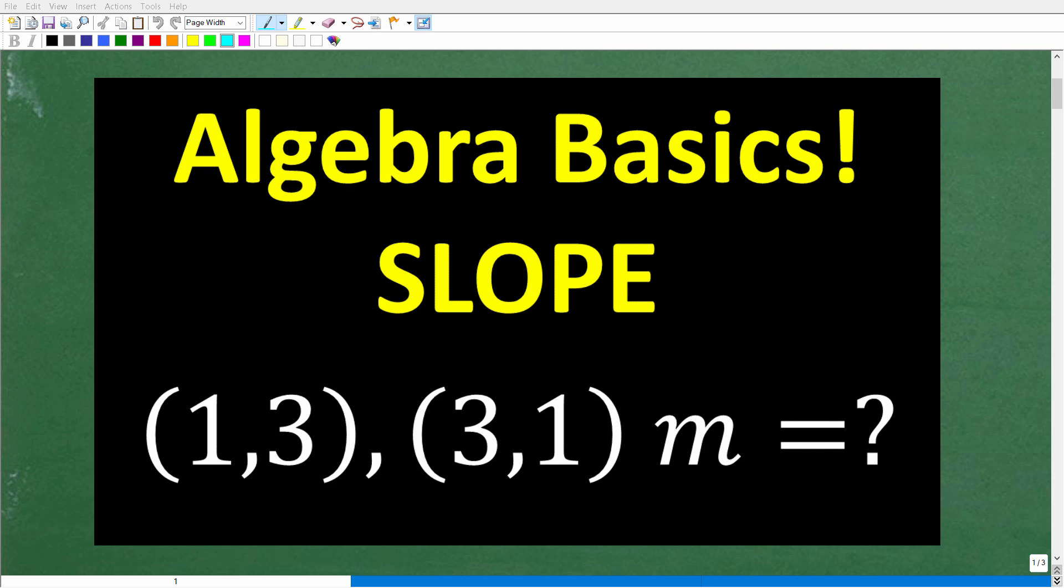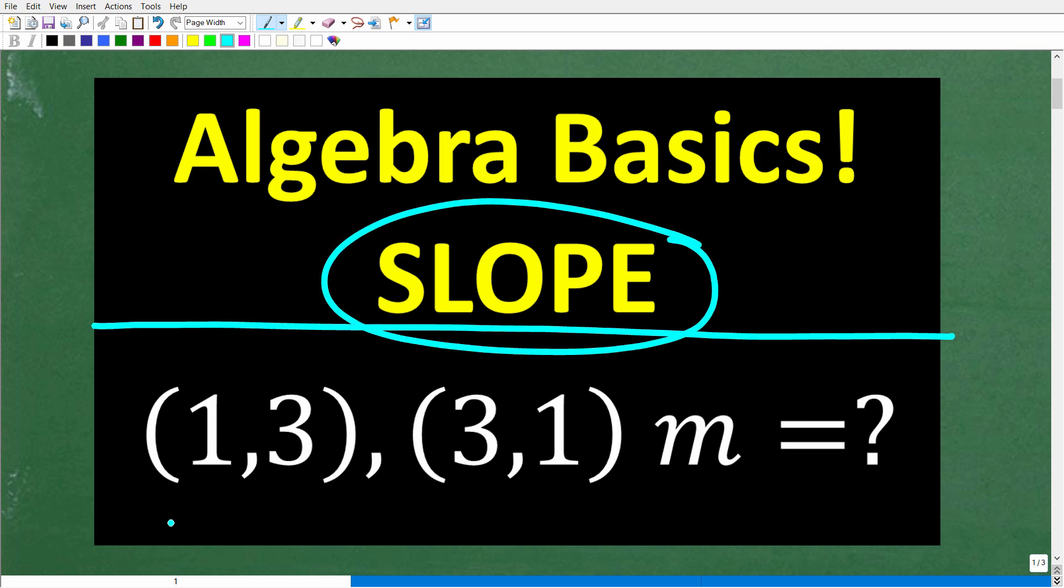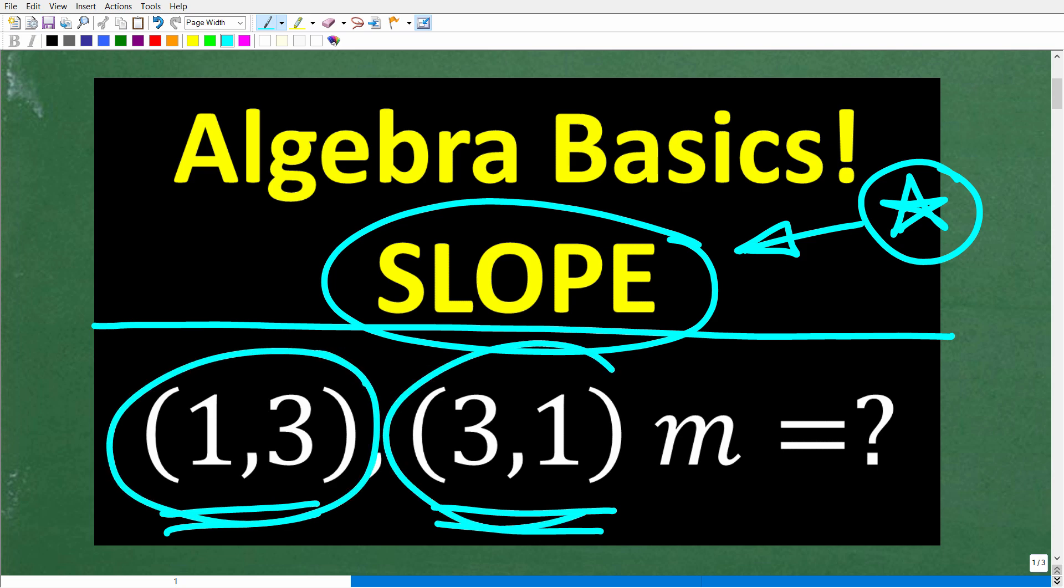As a math teacher, I can tell you that so many students make errors when calculating the slope between two points or coordinates. I'm going to review how to do this, and the real value of this video is I'm going to show you this very common mistake. We're going to calculate the slope between the coordinates (1,3) and (3,1), trying to find m or the slope.